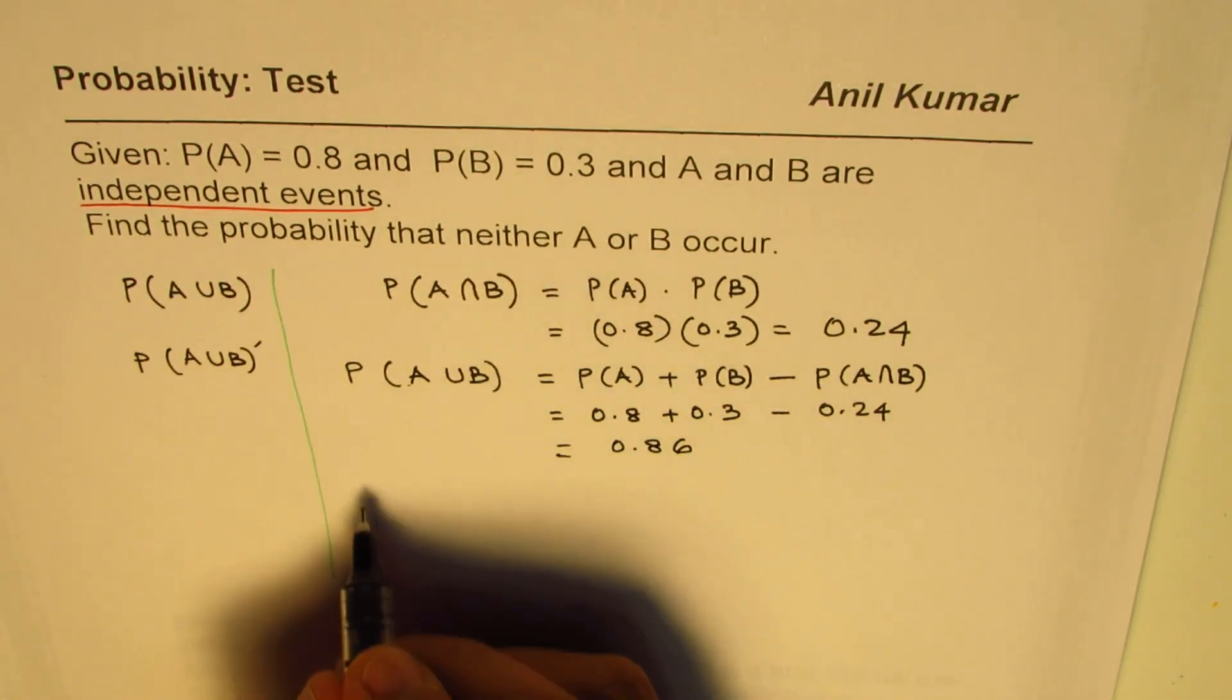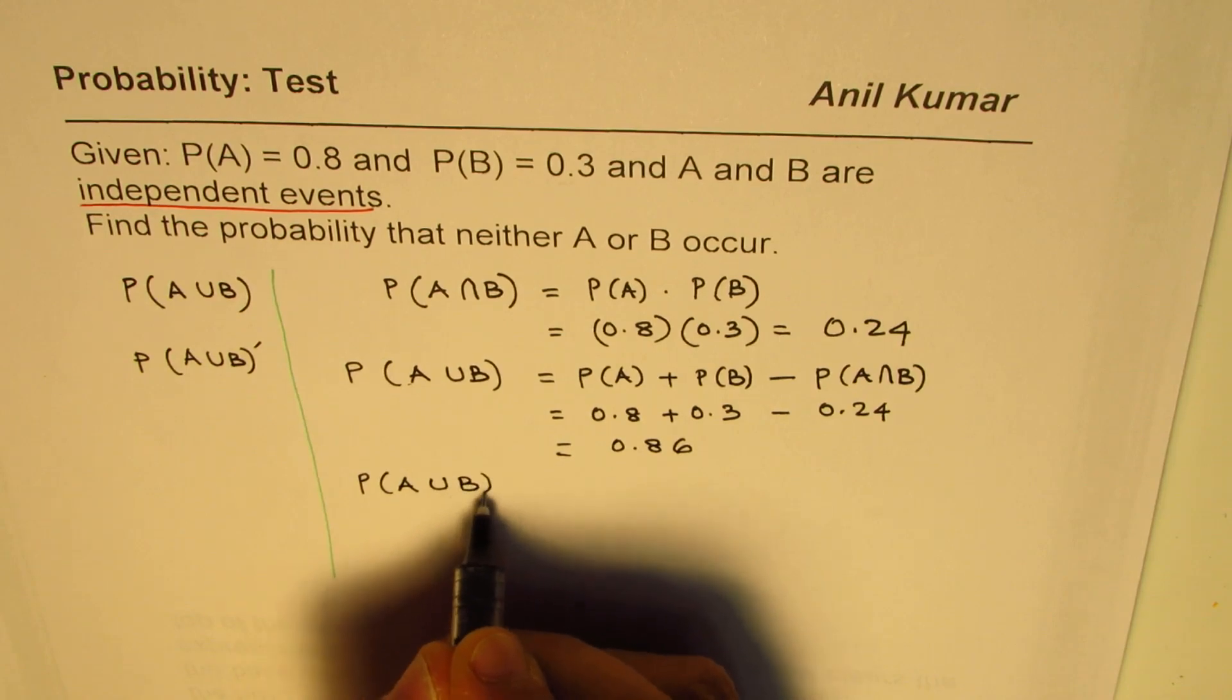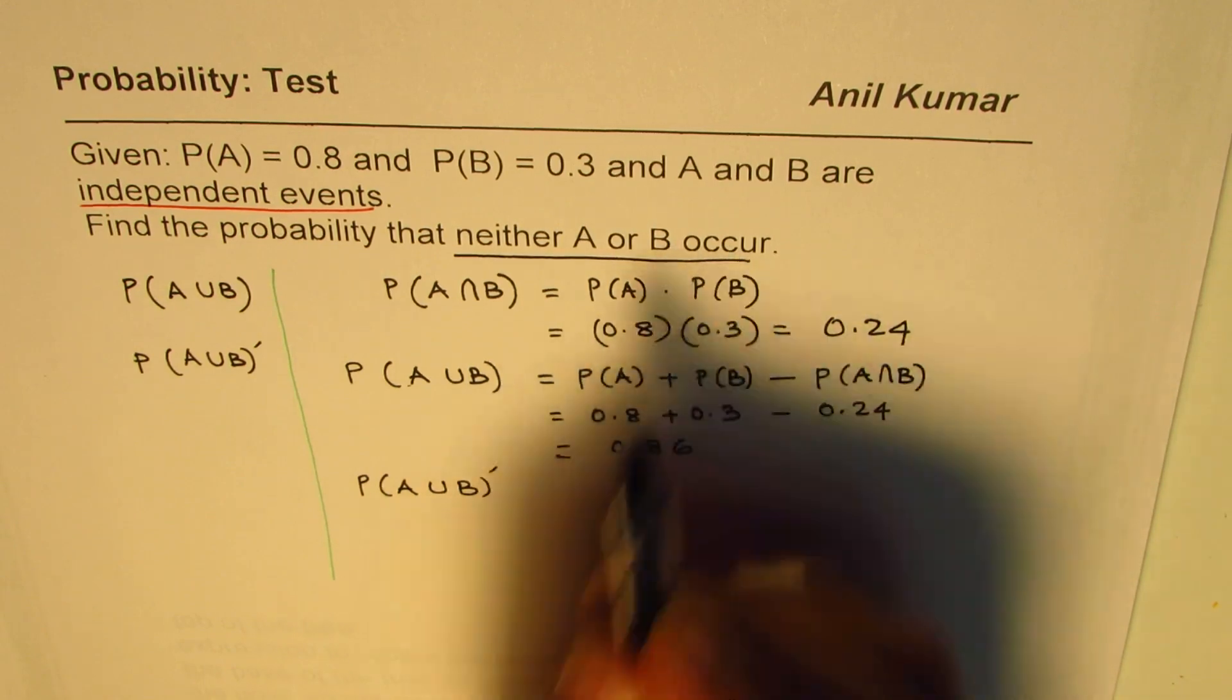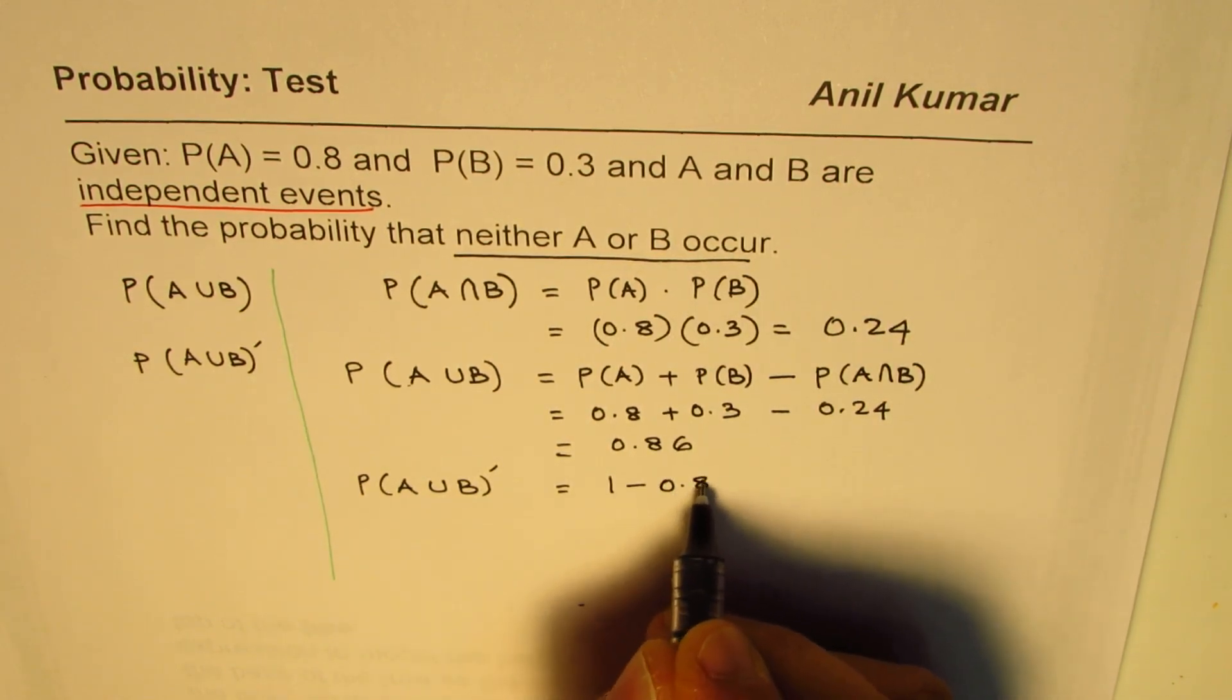We need to find neither, right? So we need to find probability of A union B complement. That means that is what we mean by neither A or B. So that should be one take away 0.86.